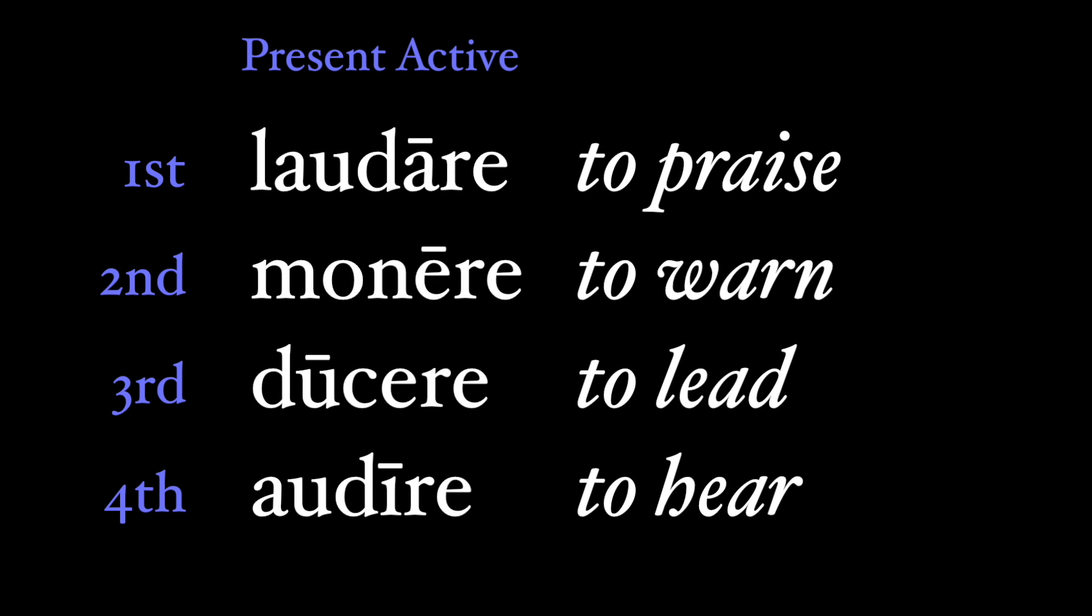We can look at the present passive infinitive in the same way that we can look at some passive verb conjugations, by first looking at the active forms. So the present active infinitive ends in -re: -are for first conjugation verbs, -ēre for second conjugation verbs, a short -ere for third conjugation verbs, including third io verbs, and -īre for fourth conjugation verbs.